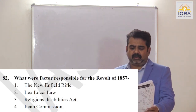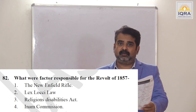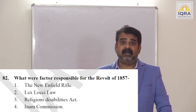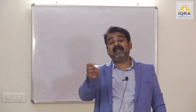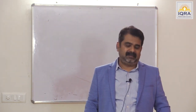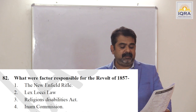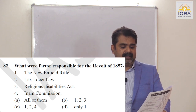What were the factors responsible for the Revolt of 1857? The new Enfield rifle — true. The issue of greased cartridges. Lex Loci Law 1850 — Religious Disabilities Act: if a Hindu converts to Christianity, his right in paternal property will not end — Hindus considered this a step to promote conversion. Religious Disabilities Act — true. Enfield Commission — true. Ending previous titles — all of them. Answer is A.